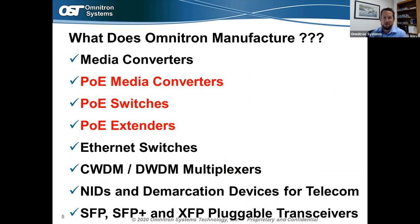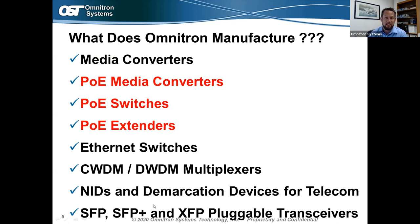Our products can be installed in commercial temperature environments like 0 to 50°C, all the way up to industrial or harsh environments of -40 to 75°C. Most of our products come with a lifetime warranty, and all our products are RoHS/WEEE certified and environmentally friendly. Omnitron manufactures media converters — copper to fiber or fiber to fiber — as well as media converters with PoE functionality, PoE switches, PoE extenders, Ethernet switches, CWDM/DWDM multiplexers, and network interface and DMARC devices.